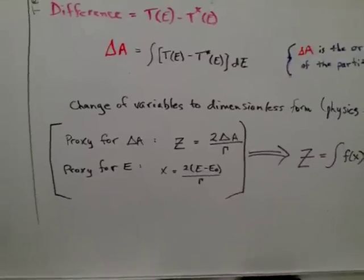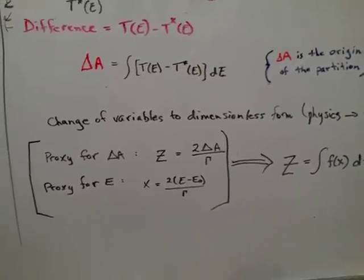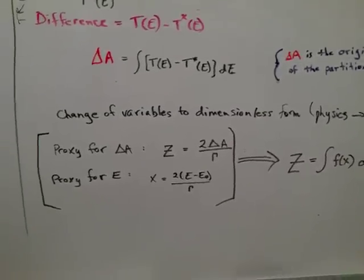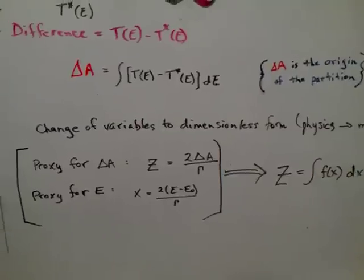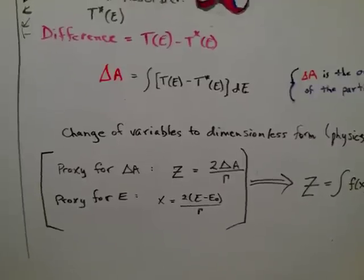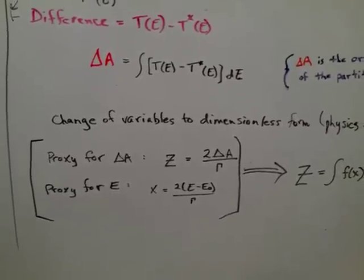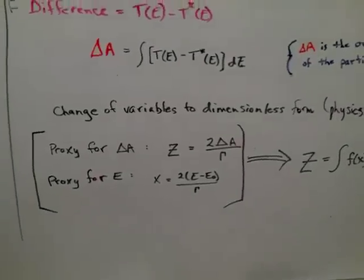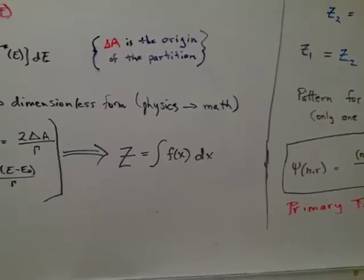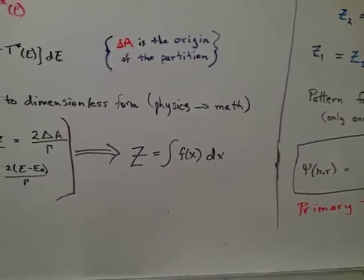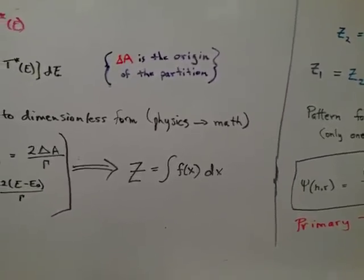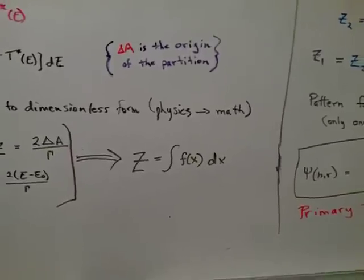We move from the world of physics into mathematics by making dimensionless proxies for the variables. For that area difference variable, I use a dimensionless proxy Z. And using those, I can have an alternative expression for that shaded area. Z is equal to the integral of a dimensionless integrand over a dimensionless parameter.